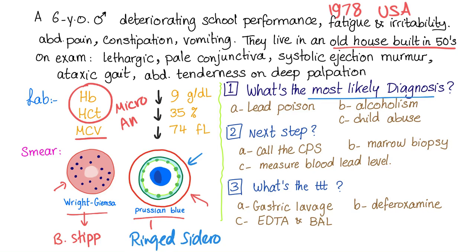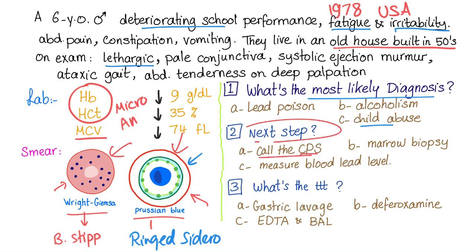Alcoholism? Very unlikely. Child abuse? Child abuse can lead to deteriorating school performance, fatigue, irritability, and lethargy — but child abuse will never produce these findings on a blood smear. Should you call child protective services? No, because it's very unlikely this is child abuse — unless the parents are making the child eat the wall, which is pretty unlikely. Marrow biopsy? No, there is no need. The correct next step is to measure the blood lead level.